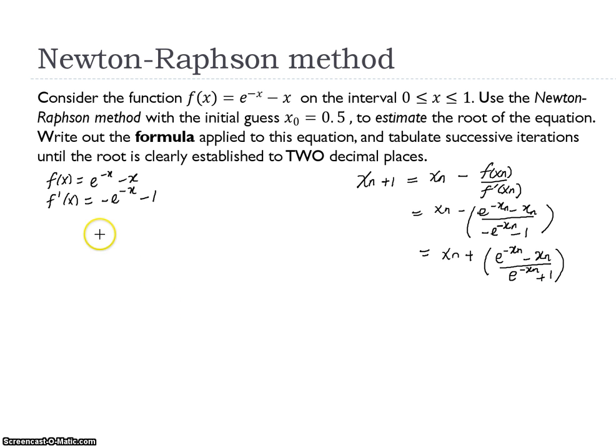Okay, so by using the initial guess x0 equals 0.5, we will substitute into the formula. So when n equals 0, we have x0 plus 1, so we have x1 equals x0 is 0.5 plus e to the power of negative 0.5. So if we calculate this, we get 0.5663.